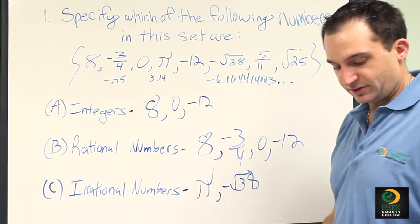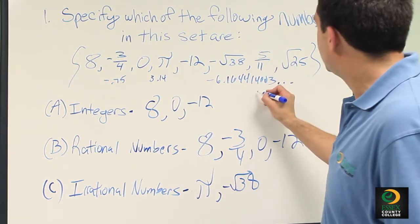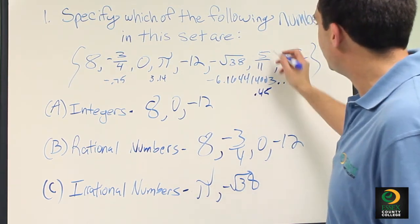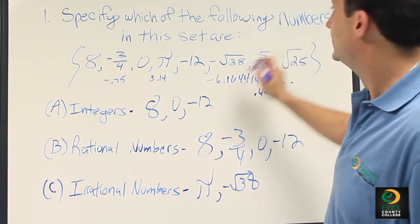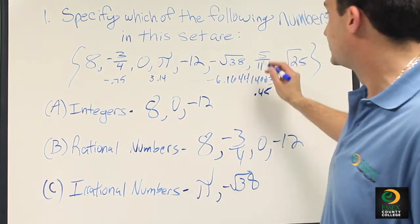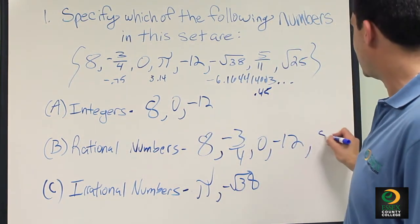5 elevenths, if you were to divide that number, it would be equal to 0.45, which means it ends. It's not an integer because it's a fraction, however, it's a rational number.